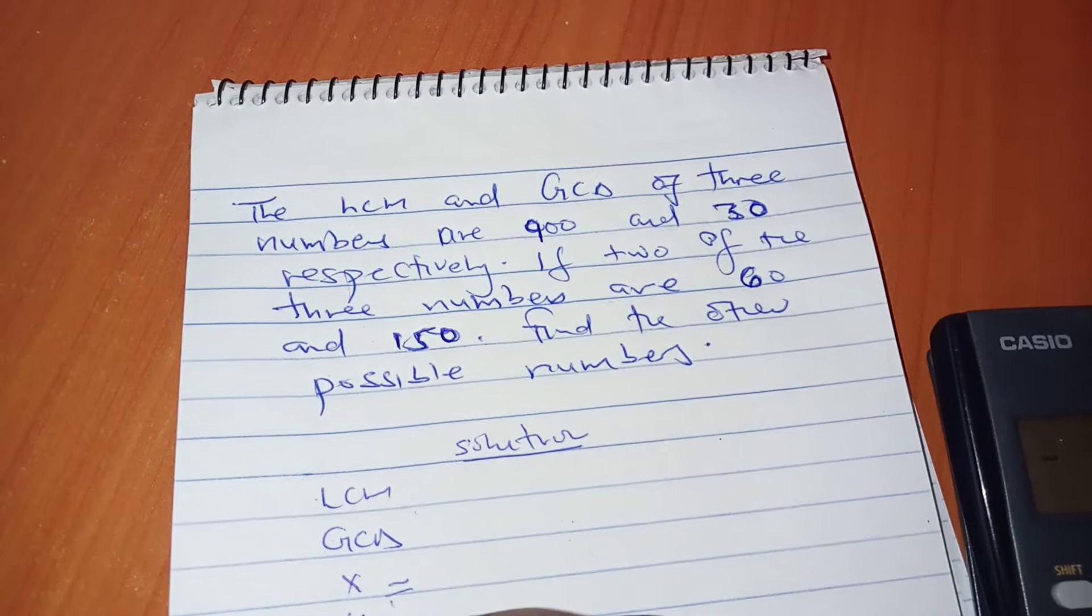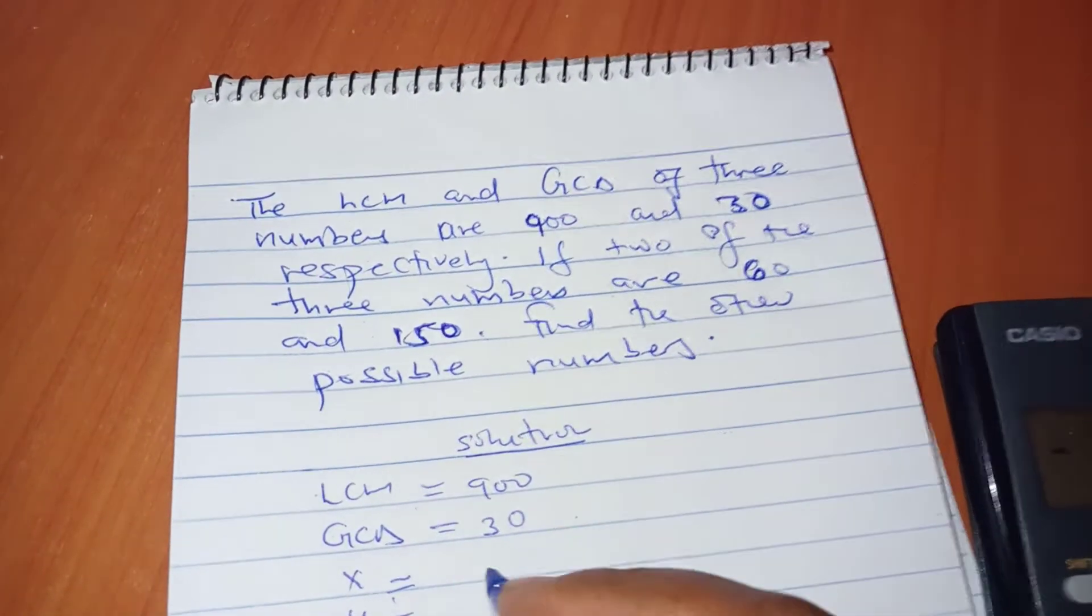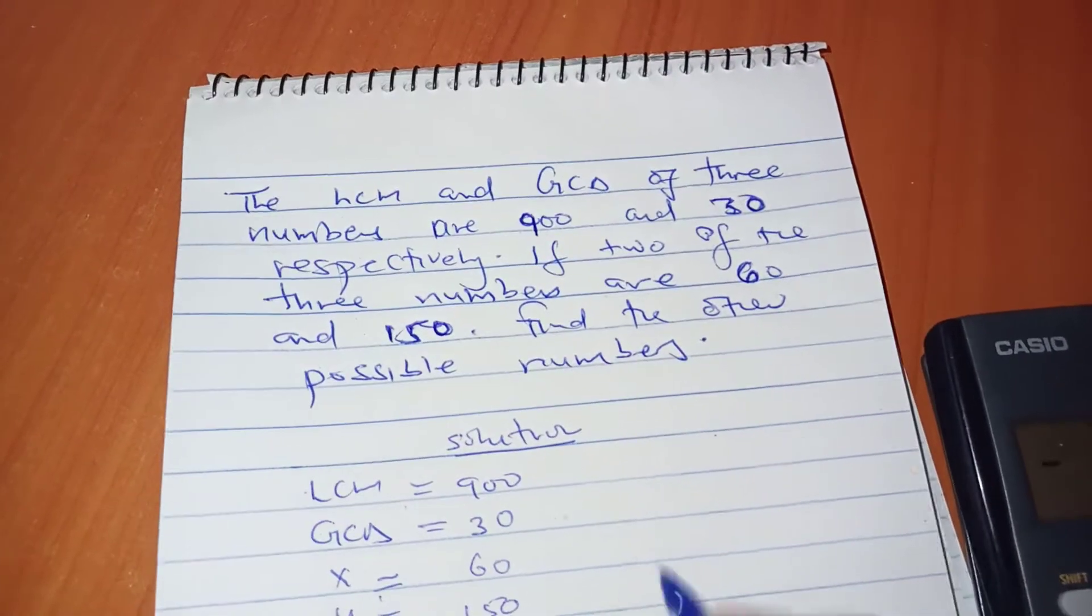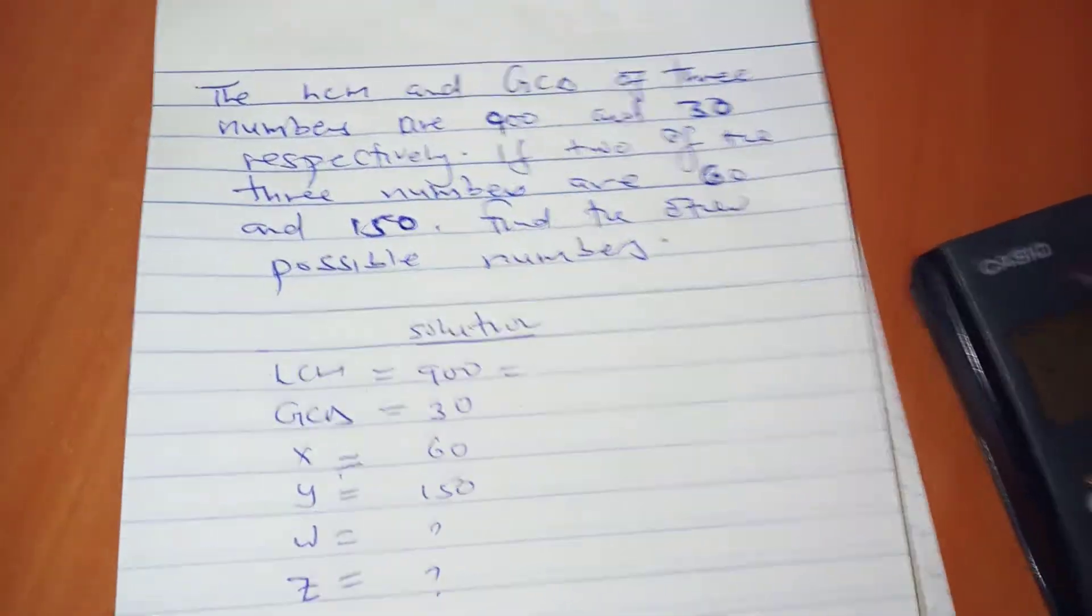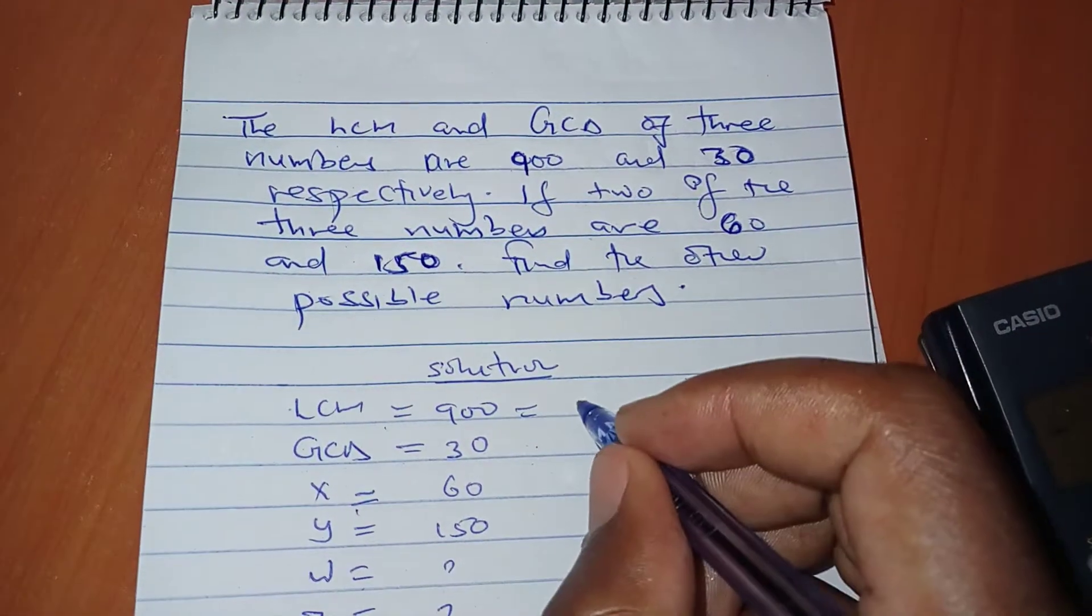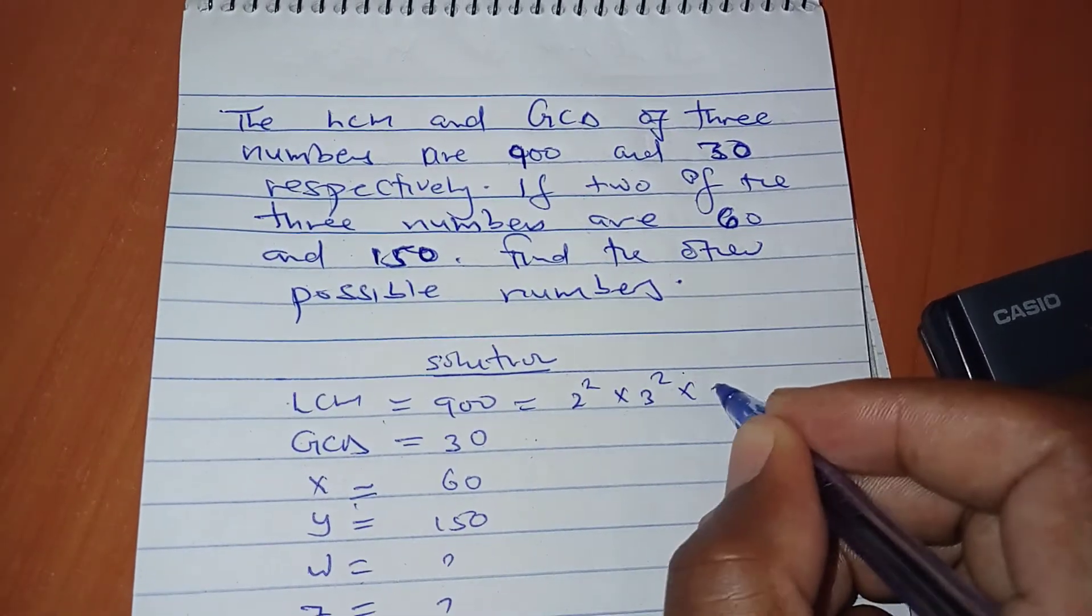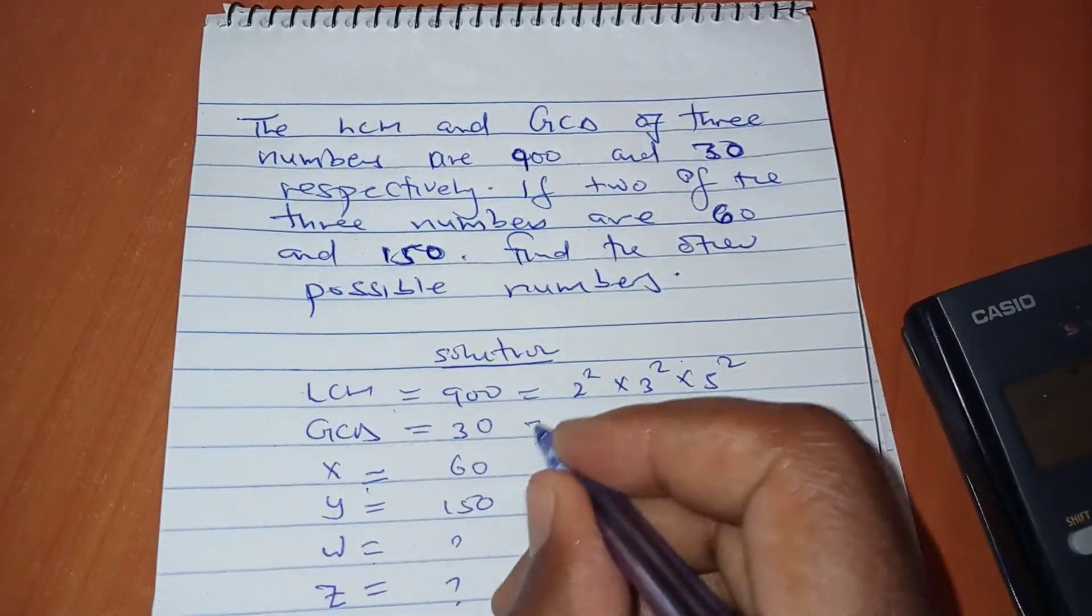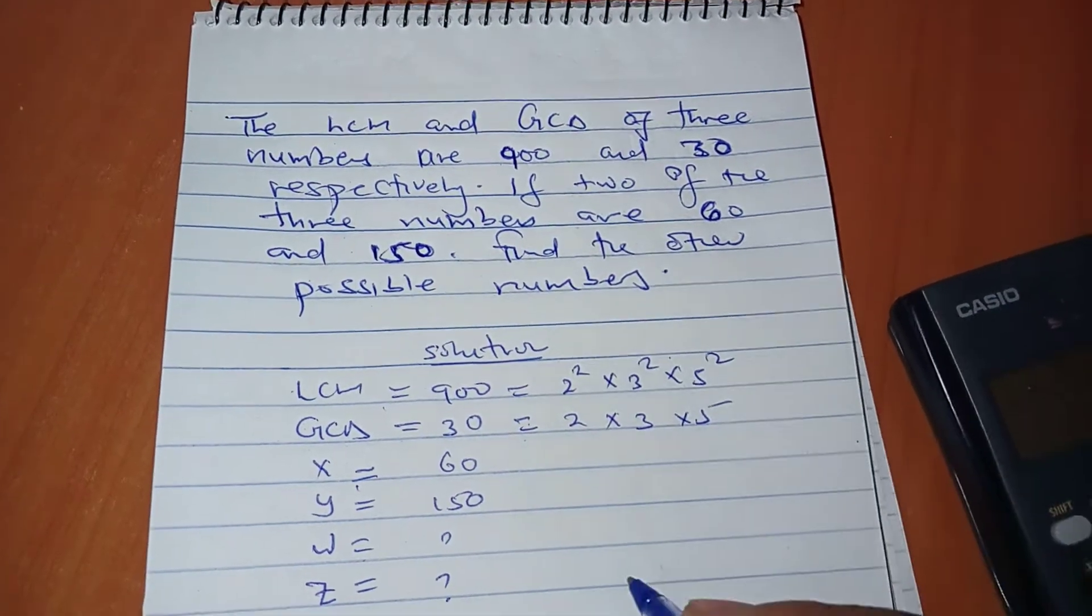The LCM is 900. I'm writing them this way because I want to write their prime factors. The prime factors of 900 are 2² × 3² × 5². The factors of 30 are 2 × 3 × 5.